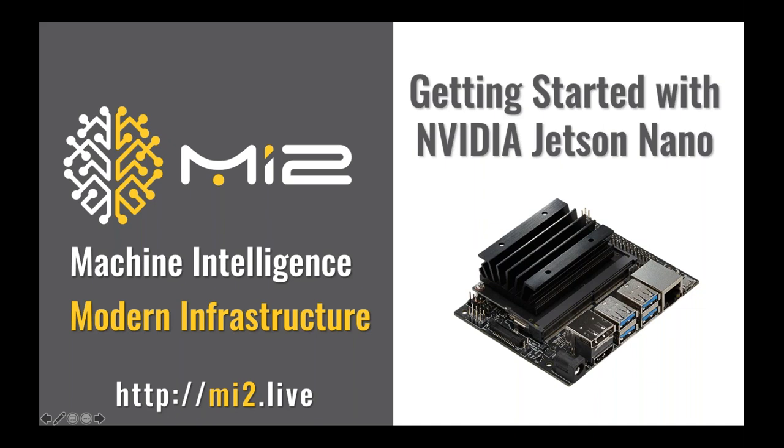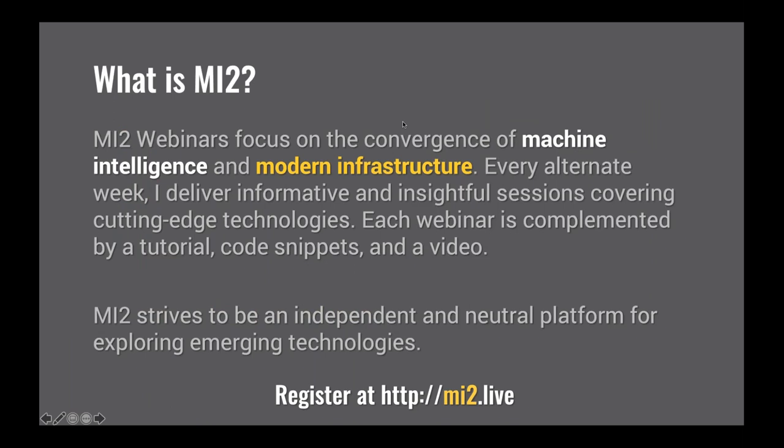If you are attending MI2 for the first time, let me set the context. We are currently experiencing the convergence of modern infrastructure and machine intelligence. On one side, we have Kubernetes, containers, and microservices gaining a lot of momentum. On the other side, machine learning, IoT, and artificial intelligence are becoming the most useful workloads for the enterprise, as well as many other businesses. These workloads, when run on modern infrastructure, deliver utmost value. My goal is to bring the convergence of modern infrastructure and machine intelligence to you.